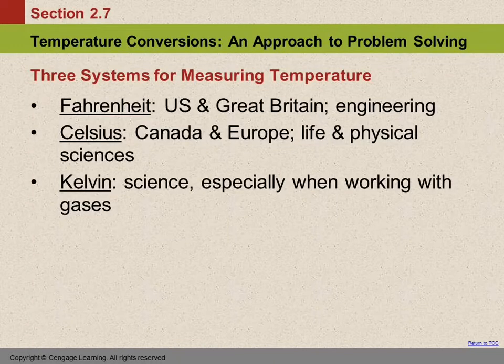This section is about temperature conversions, which are going to be different than what we've been studying with dimensional analysis. There are three major systems for measuring temperature: Fahrenheit, which is what we're familiar with — when they say it's going to be 74 degrees today, they mean 74 degrees Fahrenheit — the Celsius scale, and the Kelvin scale. We need to learn how to use Celsius and Kelvin because those are used in science.